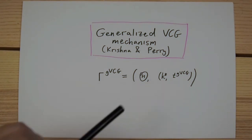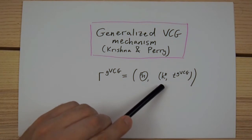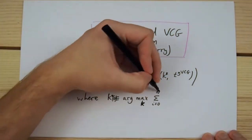As with VCG, our goal is to implement the efficient allocation rule which maximizes the social welfare.